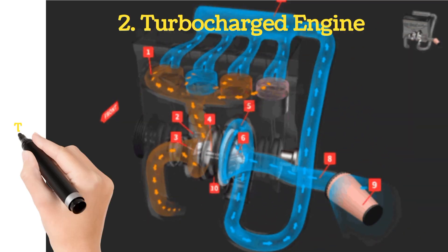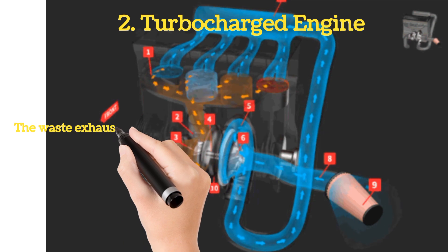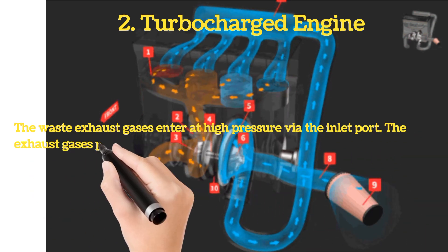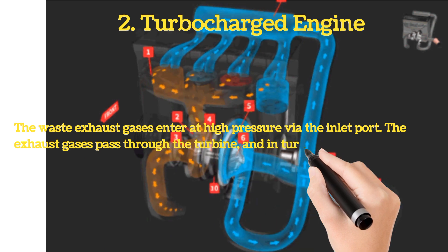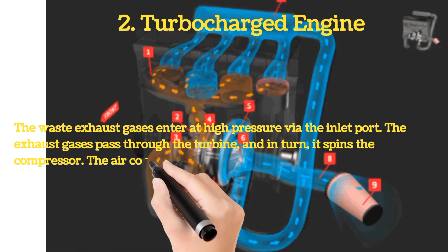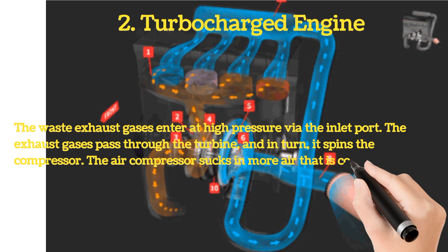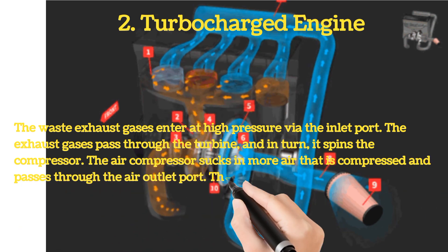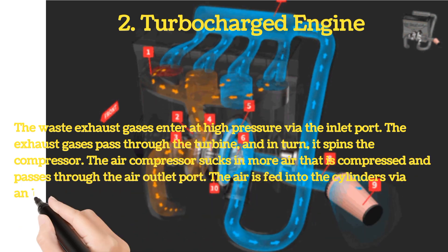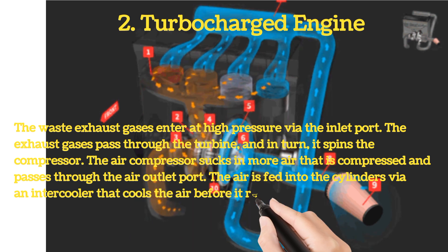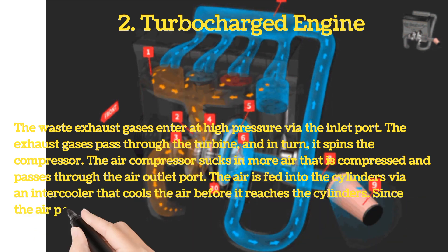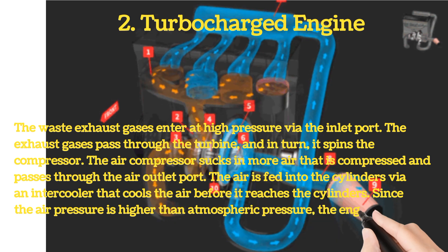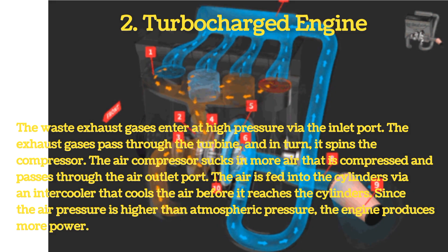The waste exhaust gases enter at high pressure via the inlet port. The exhaust gases pass through the turbine, and in turn, it spins the compressor. The air compressor sucks in more air that is compressed and passes through the air outlet port. The air is fed into the cylinders via an intercooler that cools the air before it reaches the cylinders. Since the air pressure is higher than atmospheric pressure, the engine produces more power.